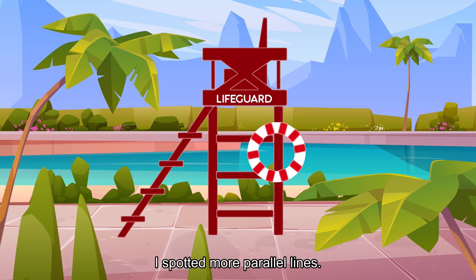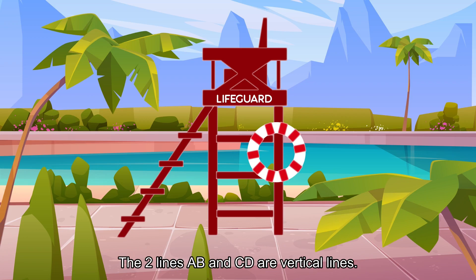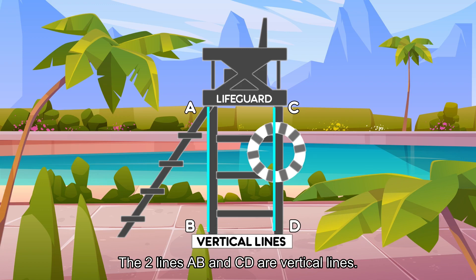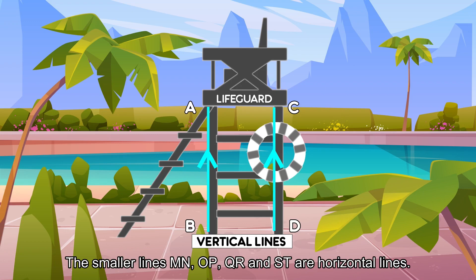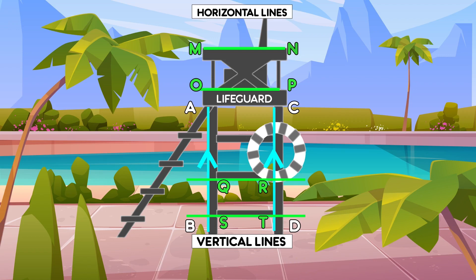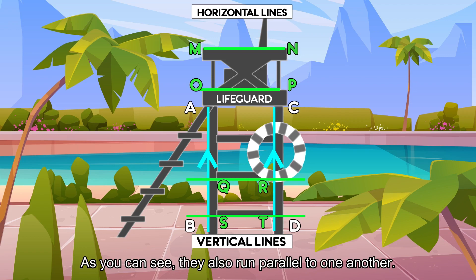I spotted more parallel lines. Look at this lifeguard chair right here. The two lines, AB and CD, are vertical lines. They are also parallel lines. The smaller lines, OP, QR, and ST, are horizontal lines. As you can see, they also run parallel to one another.